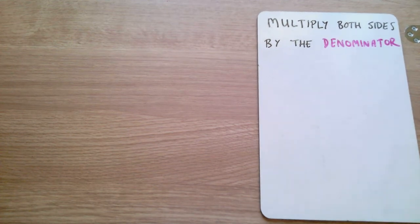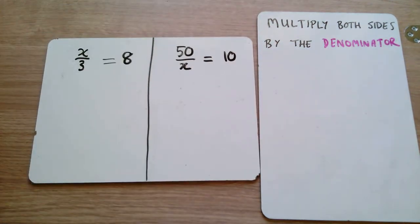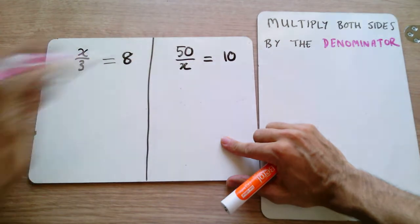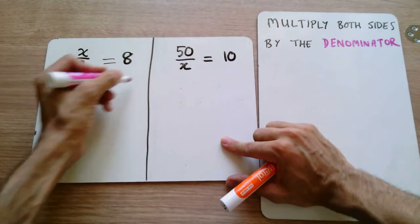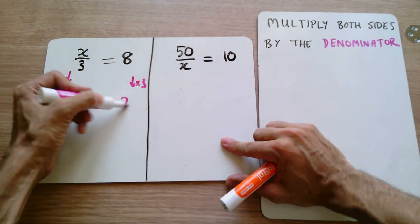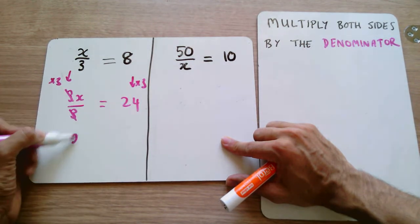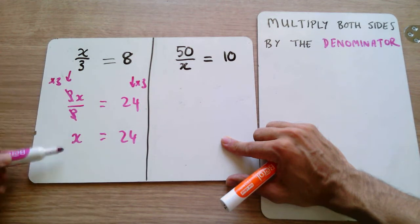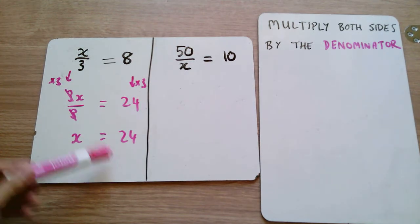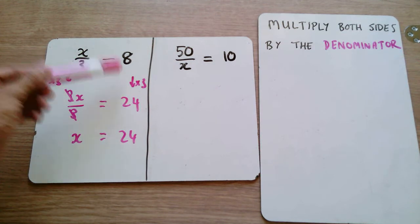Here are two simple starter questions. We have a number divided by 3 equal to 8. Some people may already see that what number divided by 3 gives us 8 — that's 24. The method is to multiply both sides by the denominator: times by 3 and times by 3. We get 3x over 3 equals 24; those 3s cancel out, leaving us with x equals 24. We can verify: 24 divided by 3 does indeed give us 8.